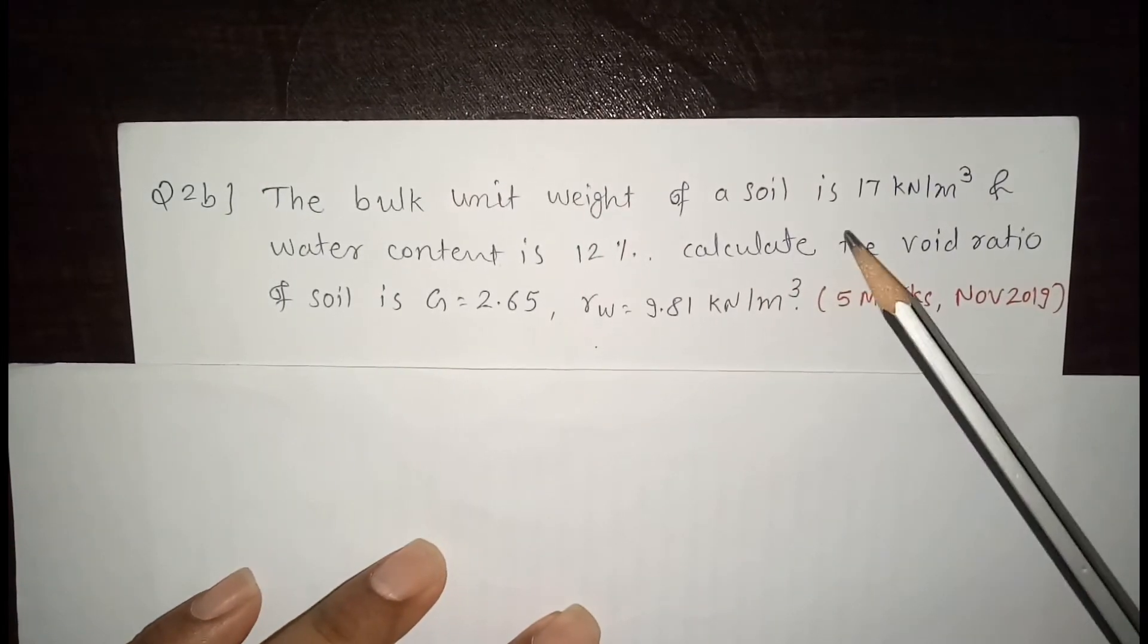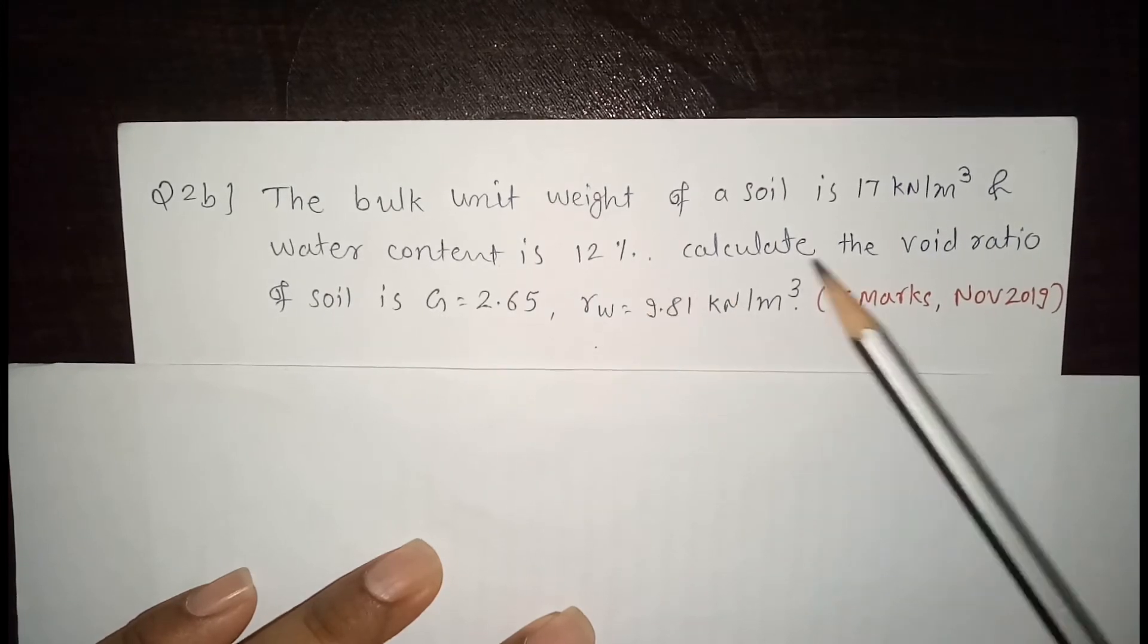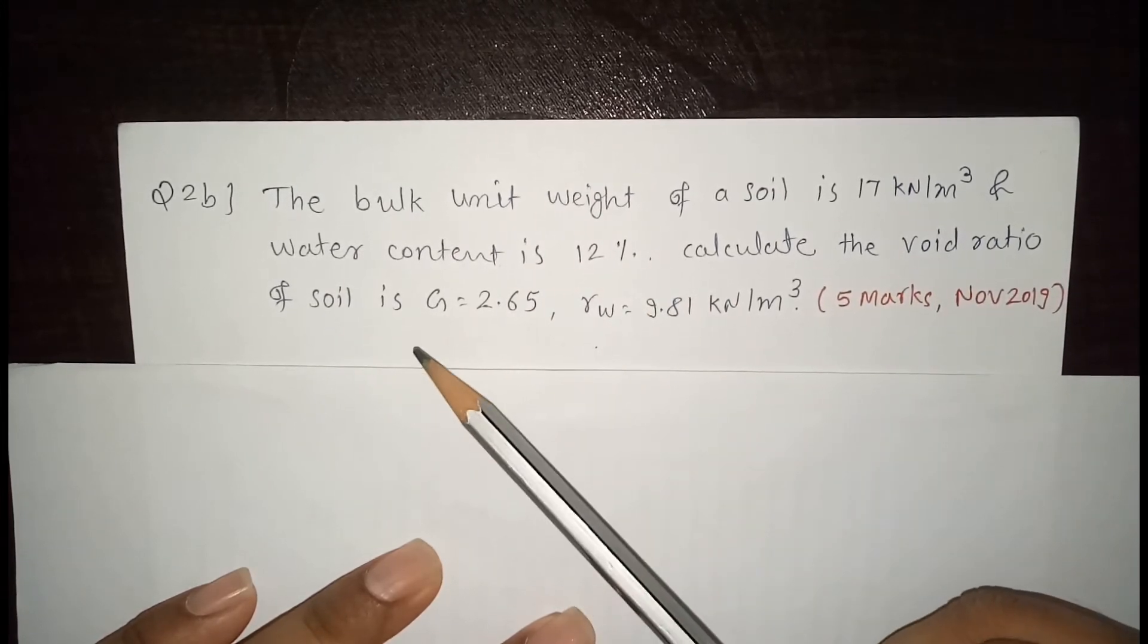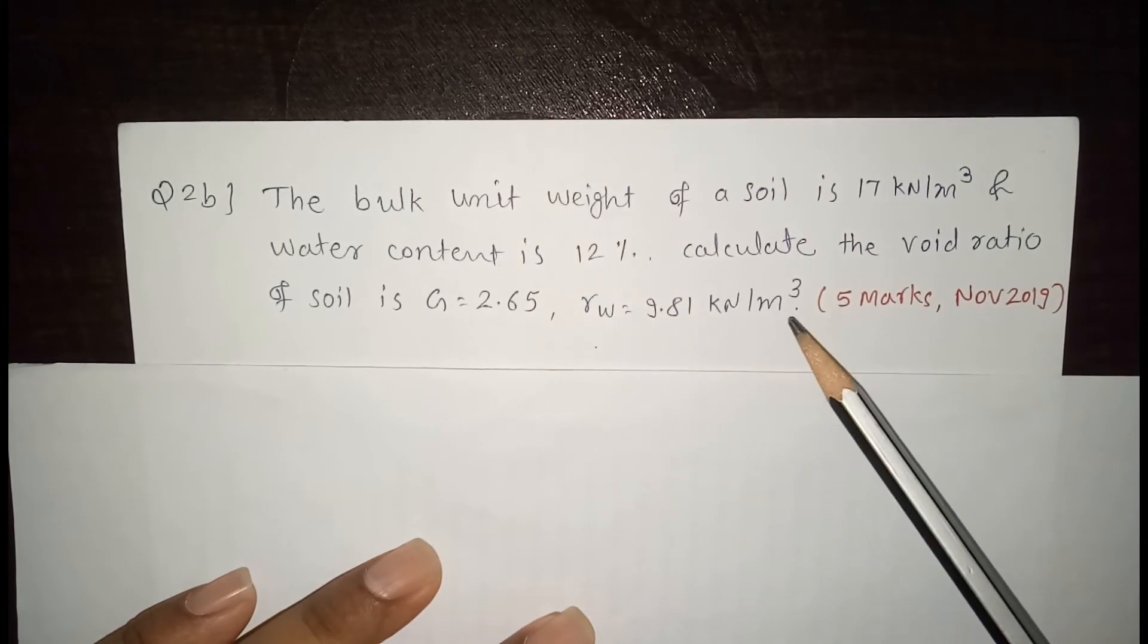The bulk unit weight of the soil is 17 kN per m³ and the water content is 12%. Calculate the void ratio of soil if G is equal to 2.65 and gamma W is 9.81 kN per m³.